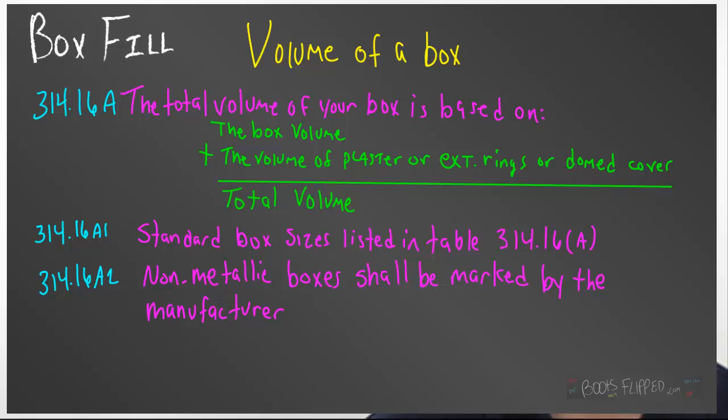That's 314.16a. In 314.16a1, it talks about standard size boxes that are listed, and you'll see those in table 314.16a. In 314.16a2, it states that non-metallic boxes shall have the volume marked by the manufacturer inside the box. Take a look next time, and you'll see that. Inside the box will be marked cubic inches. If you look inside of a two-gang box, a lot of times you'll see 36 cubic inches, and that's how large the box is, and that's what you use for your box fill calculation.